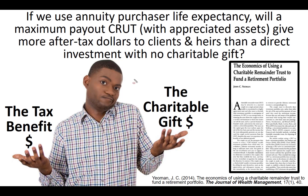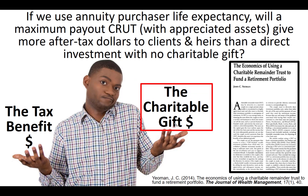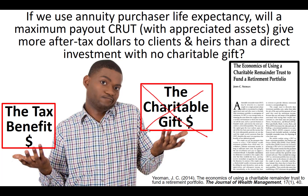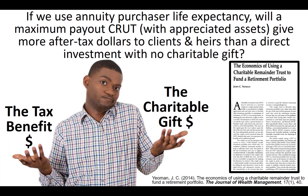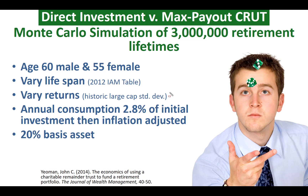Another way to think of it: if you do a charitable remainder trust, you make a charitable gift at the end of life, but you get a series of tax benefits — no upfront capital gains tax, an immediate tax deduction, and tax-protected earnings. The question was whether the cost of the charitable gift is greater or less than the tax benefits. The study was conducted using a Monte Carlo simulation of three million retirement lifetimes, because we're dealing with uncertainty — we don't know how long the person's going to live. The lifespan used the annuity purchaser life tables.